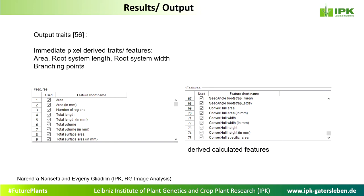Data analysis results in output traits — in total up to now we get 56 independent traits. Some are immediate pixel-derived traits: area, root system length, root system width, branching points — all related to pixels detected in the picture. Then we have derived or calculated features such as shoot angle and convex hull. All of these are programmed here at IPK by the image analysis research group.